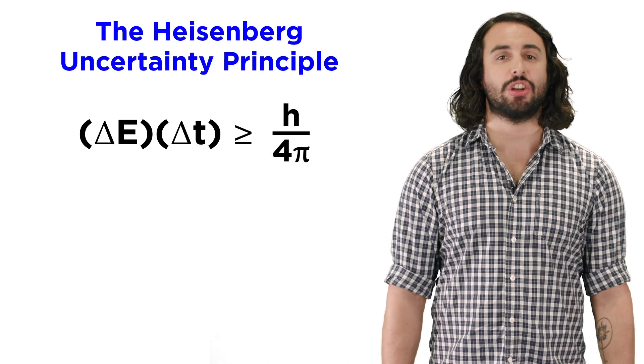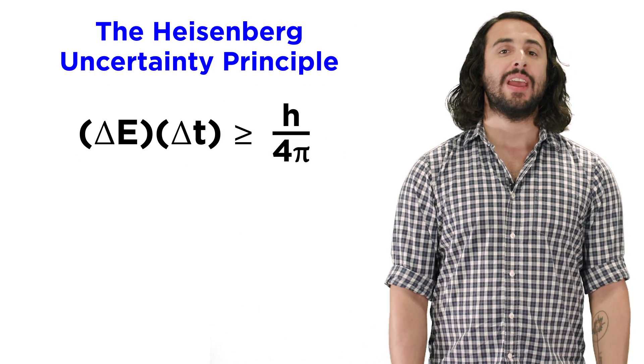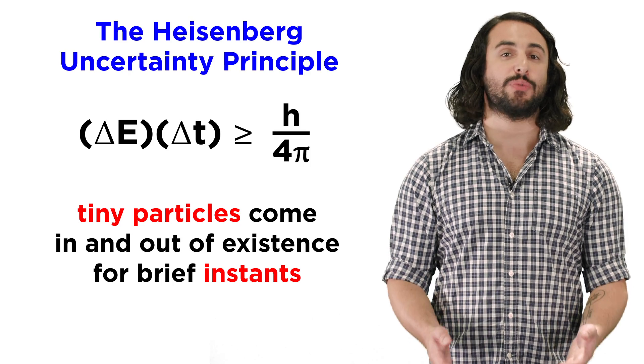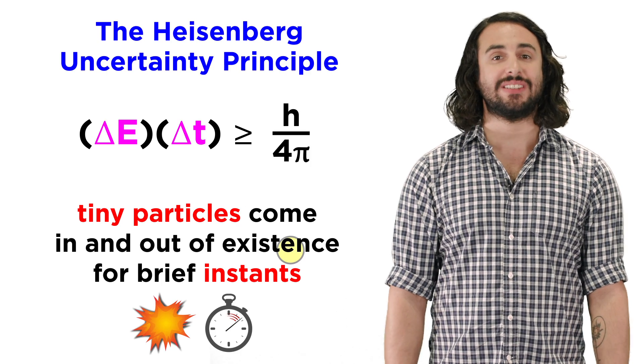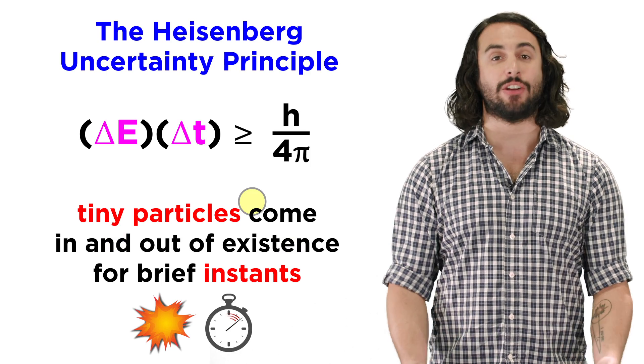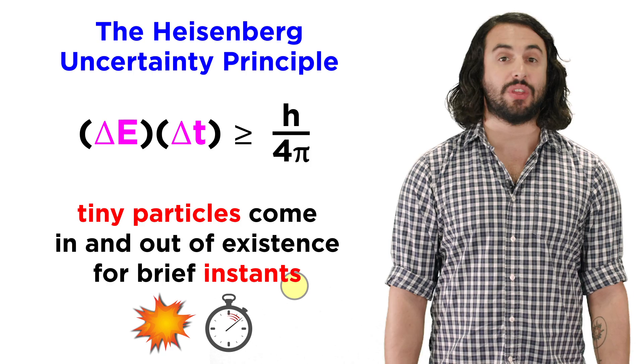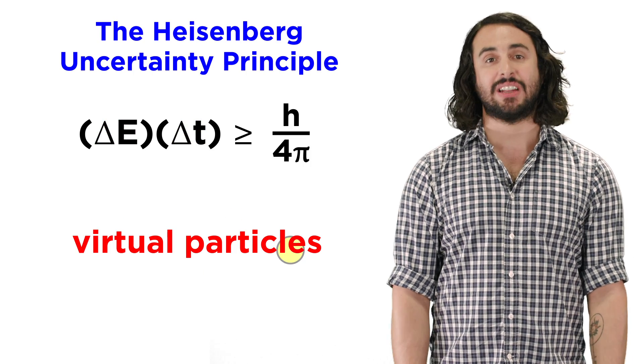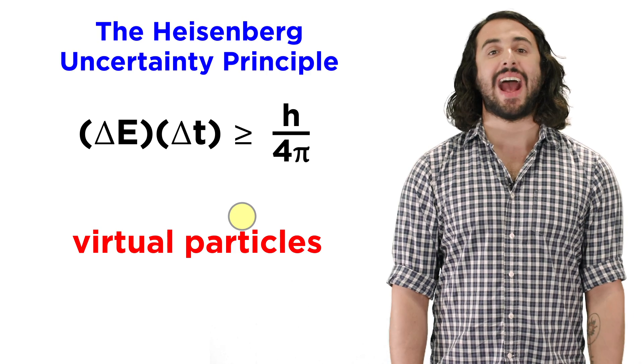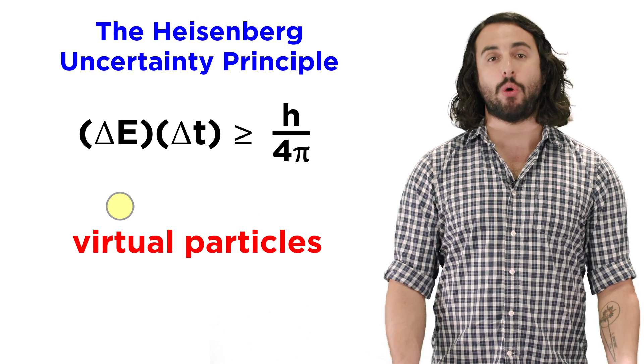Let's recall from our discussion of the Heisenberg uncertainty principle that tiny particles of different varieties are actually able to manifest from nothing because of the uncertainty associated with time and energy, and particles that do this are called virtual particles because they do not exist with the same sense of permanence as other particles that make up ordinary matter.